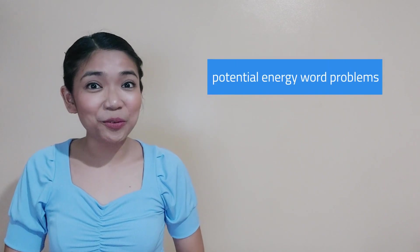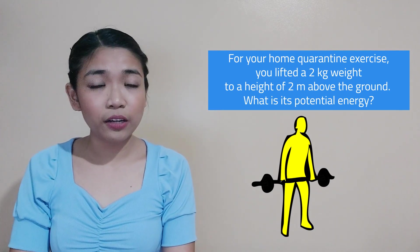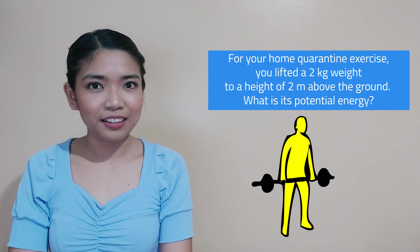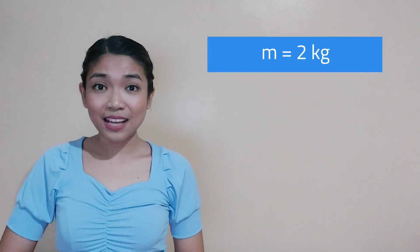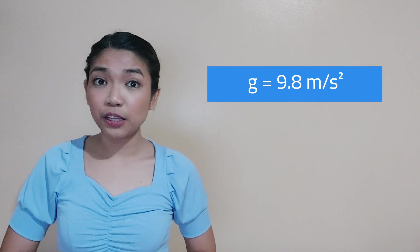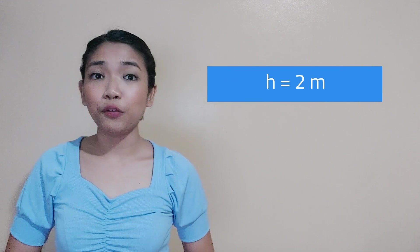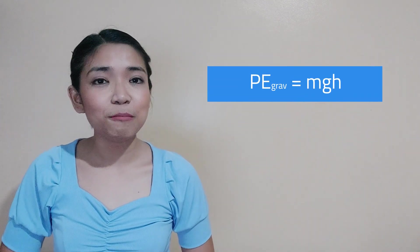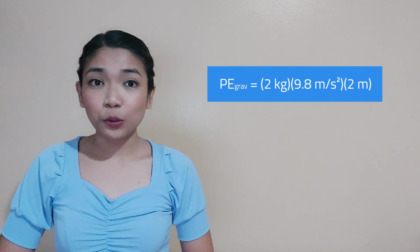Let's try solving potential energy word problems together! Problem number one: For your home quarantine exercise, you lifted a 2-kilogram weight to a height of 2 meters above the ground. What is its potential energy? Our given are mass = 2 kilograms, acceleration due to gravity = 9.8 meters per second squared, and height = 2 meters. Using the formula PE = mgh, multiplying 2 kg × 9.8 m/s² × 2 m results in 39.2 joules.